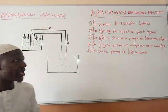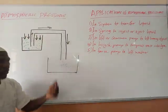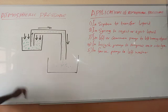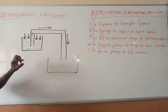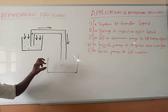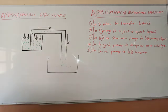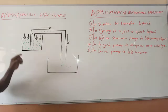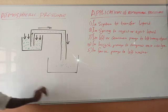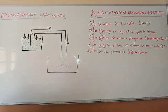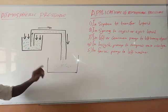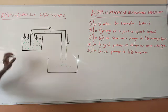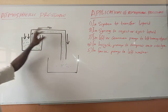Our today's topic is atmospheric pressure. The first thing we need to understand is that in the atmosphere, we have gravity that presses objects downward. This gravity exerts pressure on the air in the atmosphere. Then, the air transfers the pressure on any object on the surface of Earth. Therefore, the pressure exerted by the air per unit area on the surface of Earth is called atmospheric pressure.